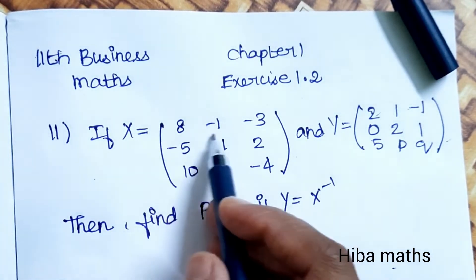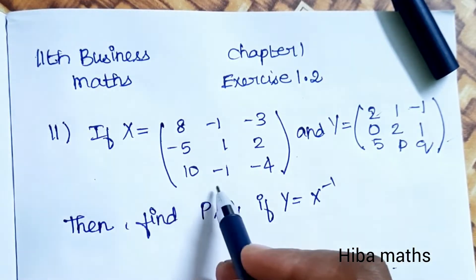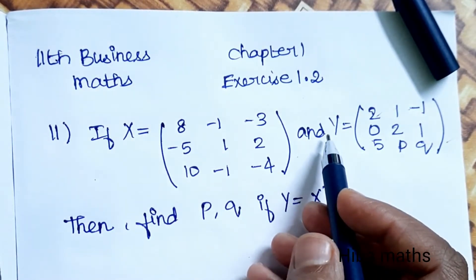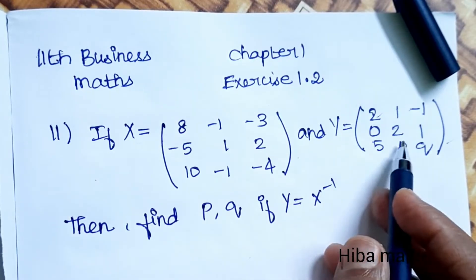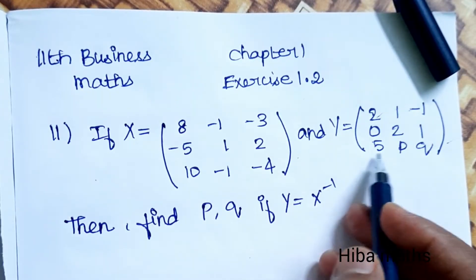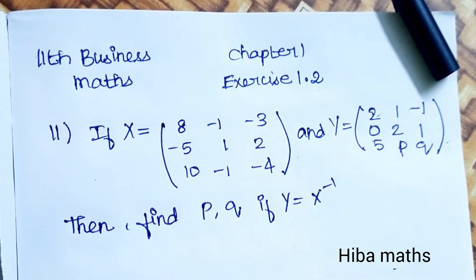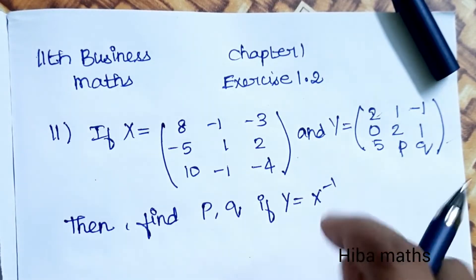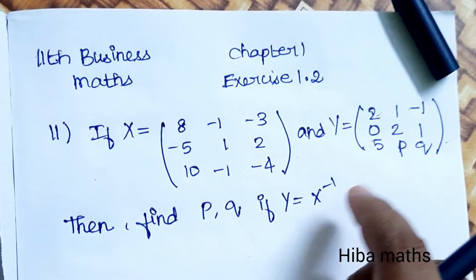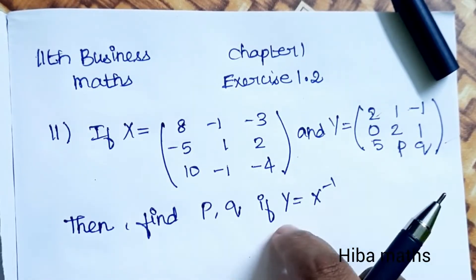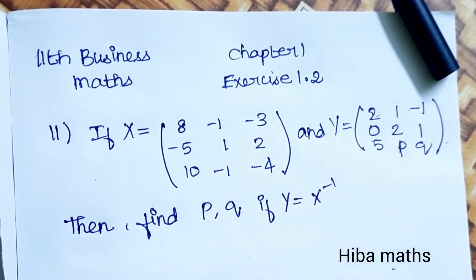If X is equal to the matrix [8, -1, -3; 5, 1, 2; 10, -1, -4] and Y is equal to [2, -1, -1; 0, 2, 1; 5, p, q], then find p and q, given that Y is equal to X inverse.